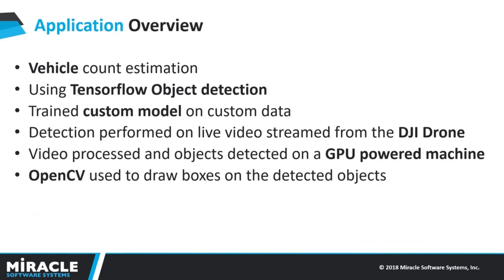With the rapid growth in computing power, AI and machine learning are gaining more popularity and companies are taking advantage of these technologies in almost every industry. One such technology is object detection. Designing a machine learning model capable of identifying and localizing an object in an image or video is the core challenge of computer vision. Google came up with a state-of-the-art object detection API built on top of the TensorFlow framework that makes training and deploying object detection models easy.